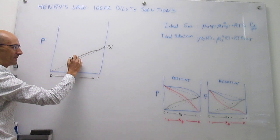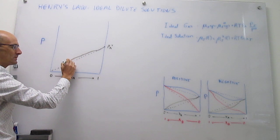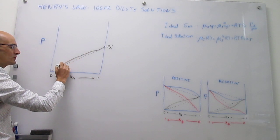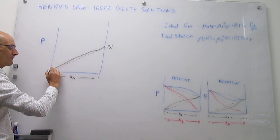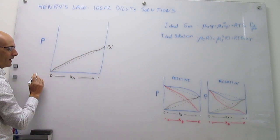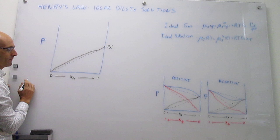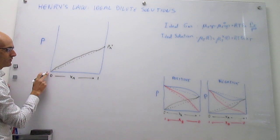Then you stay above the dashed line in the case of a positive deviation and eventually come to zero.